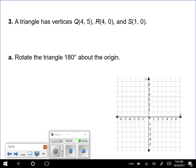Let's try one more together. So, we have a triangle. The vertices are listed, so we're going to plot those. We have 4, 5, that's Q. 4, 0, that's R. And 1, 0, that's S. So there's our triangle.